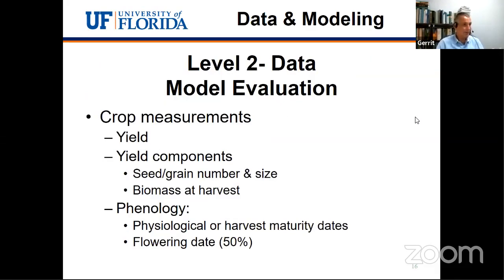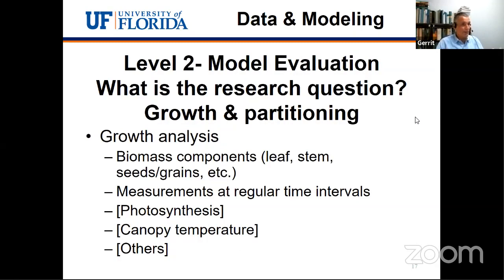Moving to level two data, we need some type of crop measurement. The minimum of the minimum would really be yield. But it's very difficult to only predict yield without other information, so it would be nice to also have yield components — number of grains, seeds, and grain size. Biomass at harvest would also be preferable so we can calculate the harvest index and look at biomass partitioning. The dates of critical events, especially flowering date and physiological maturity date, are also very critical, because if we're unable to predict phenology correctly, we are unable to predict yield.